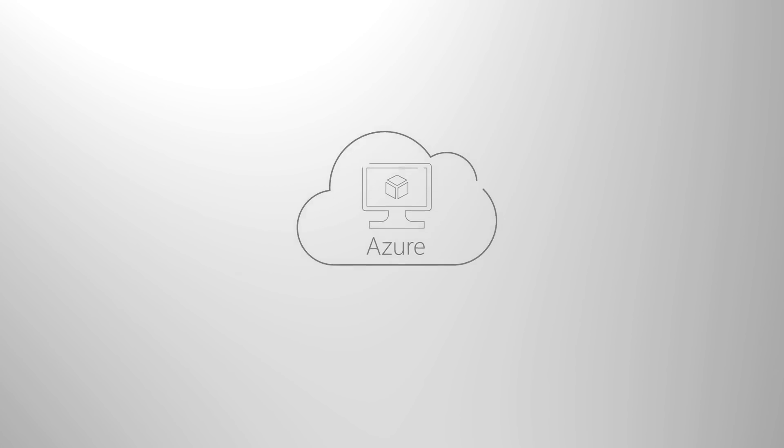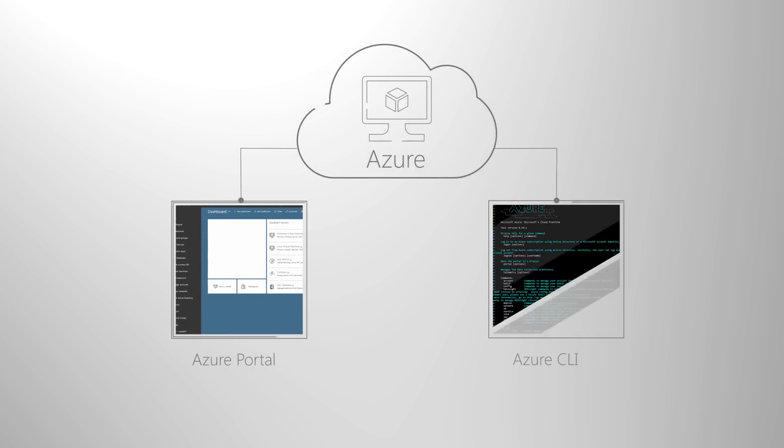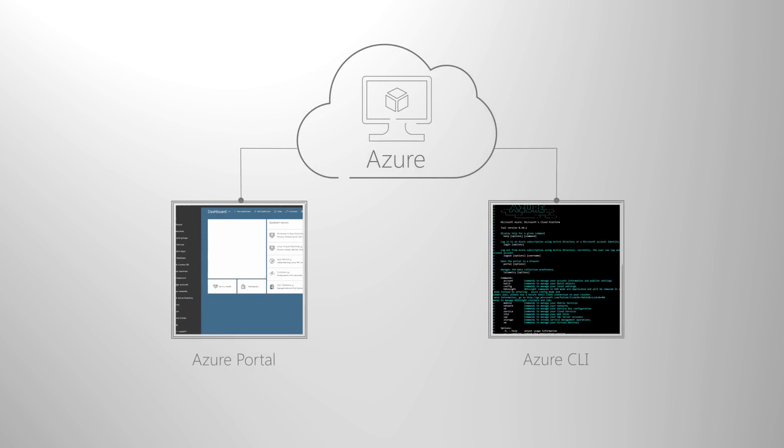Just as you'd create AWS instances in the AWS management console, you can create Azure VMs directly through the Azure portal using APIs, or via the Azure command line interface for Windows or Linux.